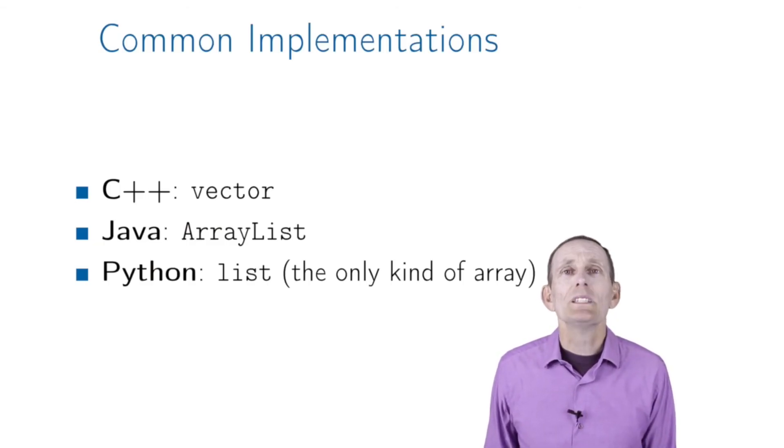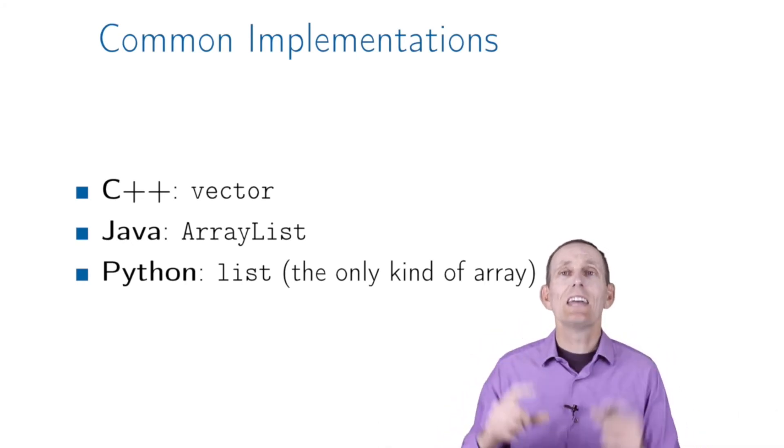There are common implementations for these dynamic arrays. In C++, the vector class is an example of a dynamic array. Notice it uses C++ operator overloading, so you can use the standard array syntax of left brackets to either read from or write to an element. Java has an ArrayList, Python has the list.